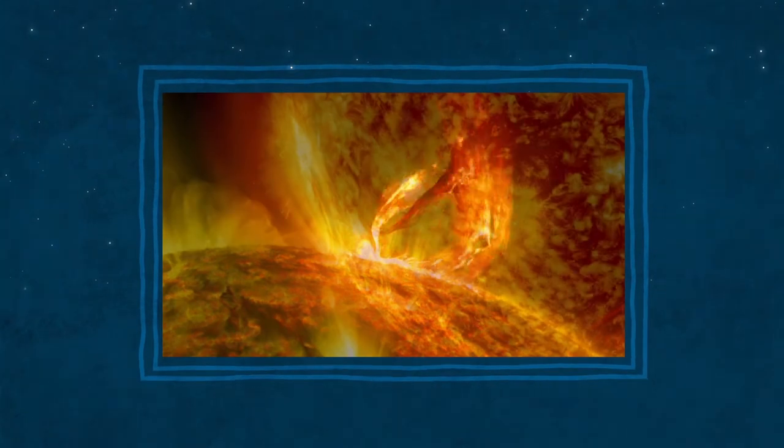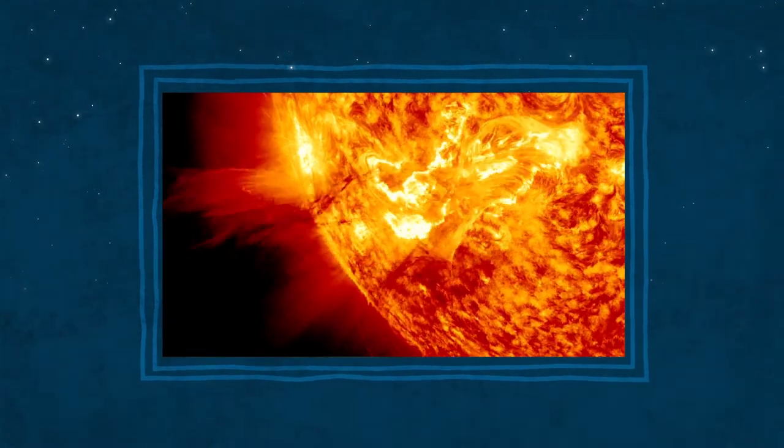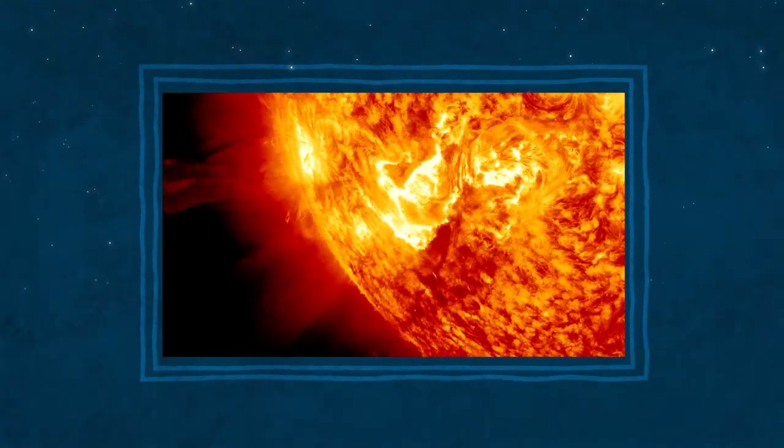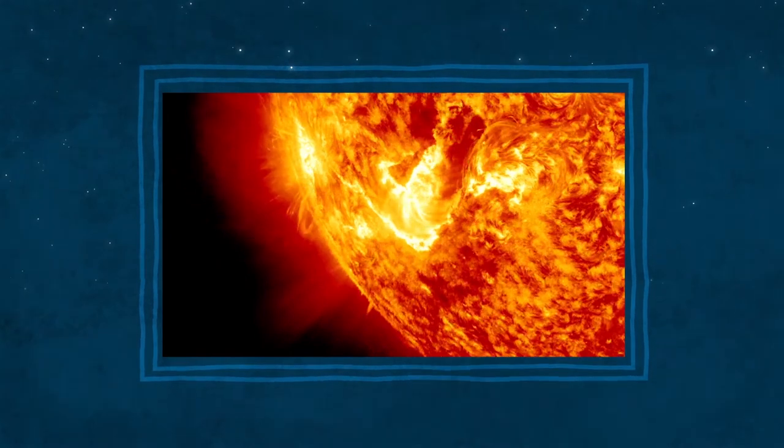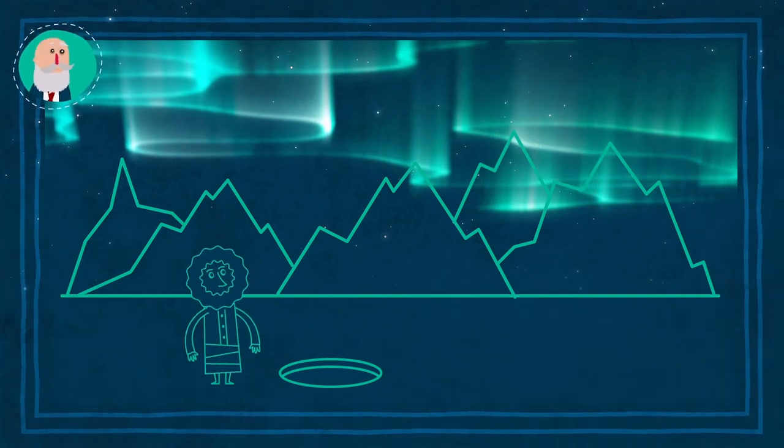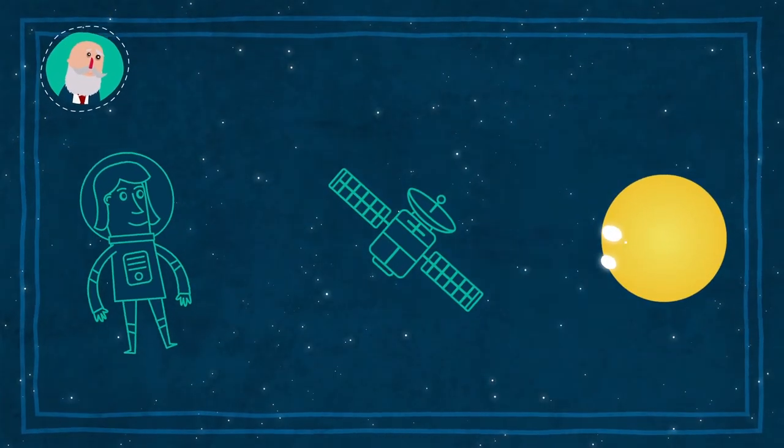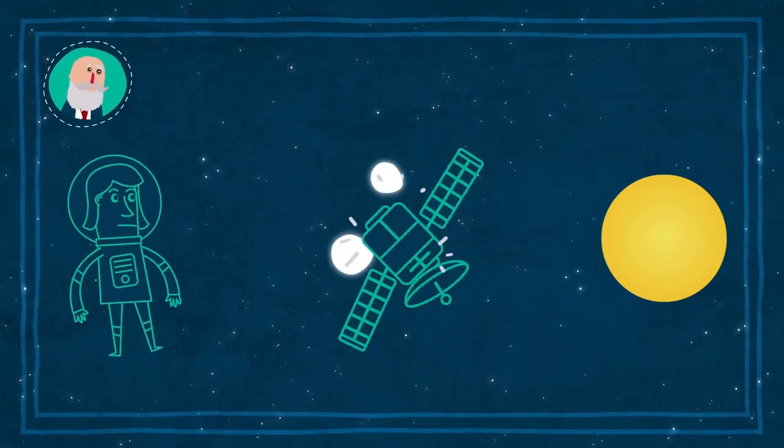Algunas fulguraciones provocan tormentas solares, ráfagas de partículas cargadas que viajan a través del espacio a gran velocidad y pueden llegar a la Tierra. Al entrar en la atmósfera terrestre cerca de los polos, generan las auroras. Además, pueden afectar a las telecomunicaciones y provocar apagones.